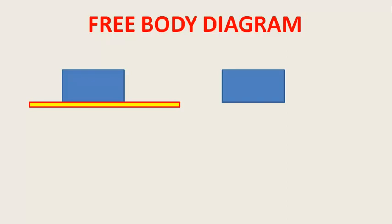इसका free body diagram देखिए — इसमें weight नीचे की तरफ लग रही है, जो mg के बराबर है। और body नहीं जा रही इसलिए ऊपर की तरफ एक normal reaction की force लग रही है। Body vertical plane में न ऊपर जा रही है, न नीचे — इसका मतलब न mg बड़ा है, न N बड़ा है, तो ये दोनों बराबर हैं। इस case में mg और N बराबर है।